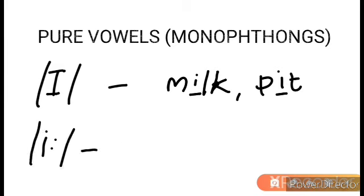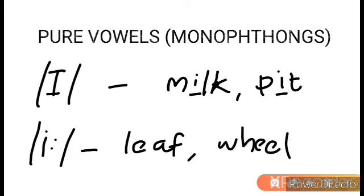The next sound is /iː/ — a little bit longer. As in leaf, wheel, heel, shield. An 'ea' combination or double 'ee' combination often gives this sound. So the first sound is /ɪ/ and the second sound is /iː/.